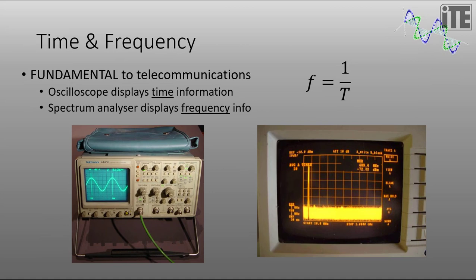This is what we call a spectrum analyzer and it's displaying a signal in what we call the frequency domain. Now time and frequency of course are related by this equation here which is frequency equals one over time. Sometimes it's useful to look at a signal in the time domain and other times it's more useful to look at it in the frequency domain.